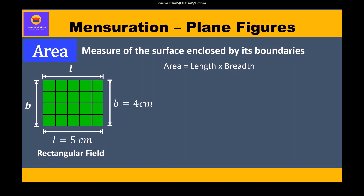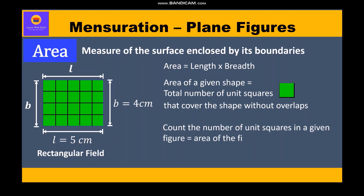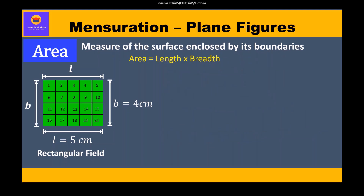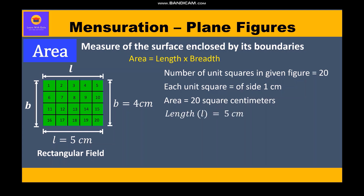Always remember, area of any given shape equals the total number of unit squares that cover the shape without overlaps. In this particular rectangle, we have a total of 20 unit squares, each of side 1 centimeter. So the area is 20 square centimeters. The total length is 5 cm and breadth is 4 cm, giving area = 5 × 4 = length × breadth.